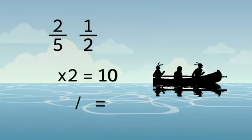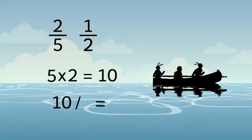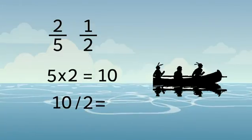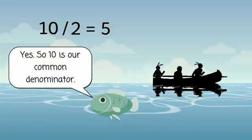So we take 5 and multiply it by 2 and we get 10. Then we take 10 and divide it by the smaller denominator, 2. Is 10 divisible by 2? The answer is yes. So 10 would be our common denominator.